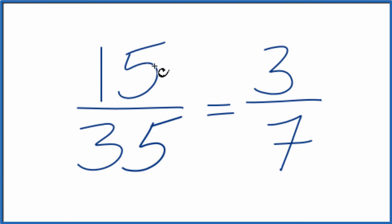So we can simplify or reduce 15 35ths down to 3 7ths. We just divide the numerator by 5 and the denominator by 5, because 5, that's the greatest common factor we have here.